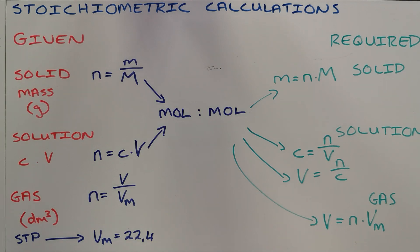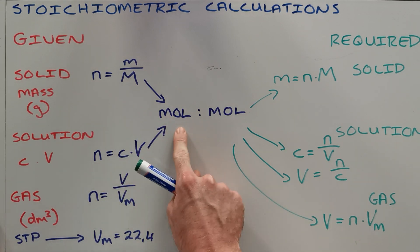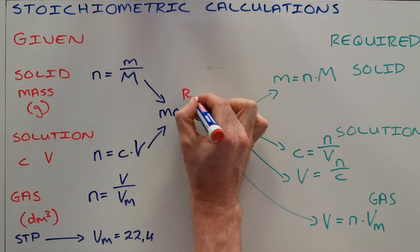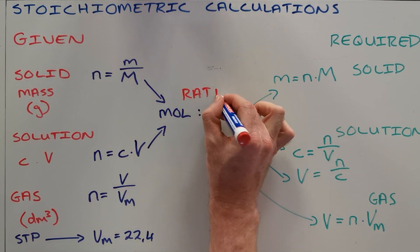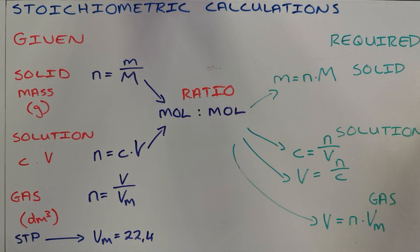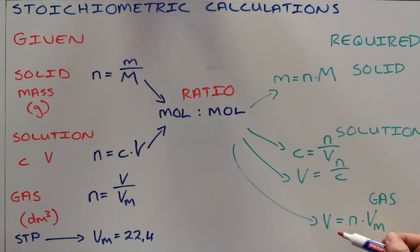As you can see, these questions are almost symmetrical: you are given a substance as either a solid, solution, or gas, and you use one of three equations to convert it into a number of moles. You then use the ratio from the coefficients of your balanced equation to convert it into the number of moles of what is required. Your last step is to use the appropriate equation to convert it back into a solid, solution, or gas.